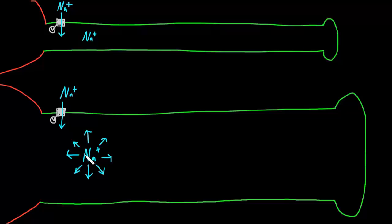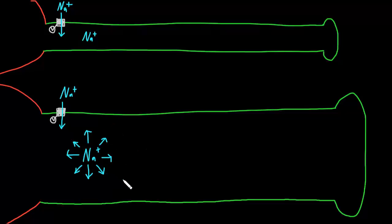Now if they happen to travel backward in the axon, back toward the soma, or if they happen to travel perpendicular to the long axis of the axon, that won't really contribute much to the action potential, other than the effects they'll have on the other sodium ions that are coming in. But if they're heading in any of these directions down the length of the axon, that's going to contribute to moving the action potential down the axon.